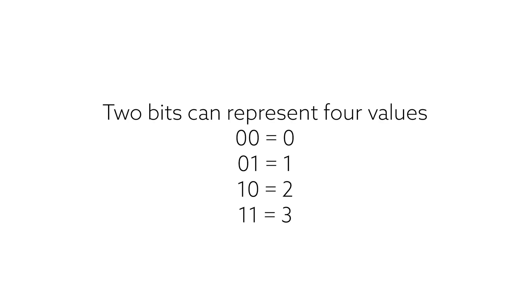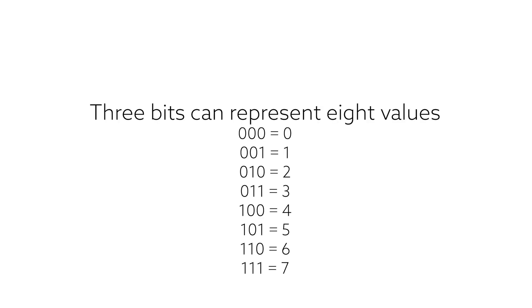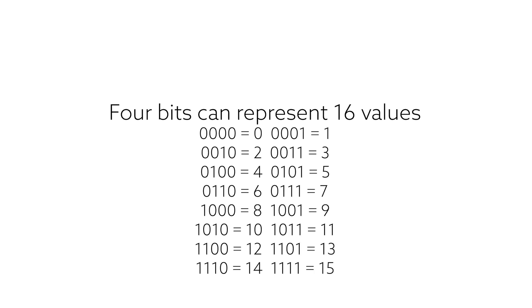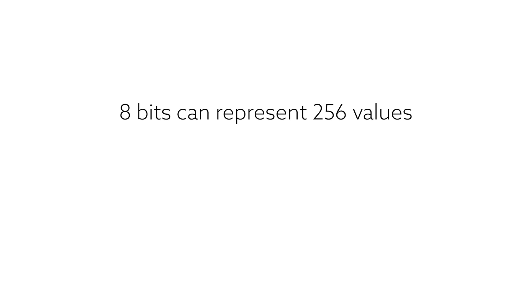Here is why. A bit is binary — it is either 0 or 1, so a single bit can represent 2 different values. If we have 2 bits, then we can represent 4 different values: 00, 01, 10, or 11. If we have 3 bits, then we can represent 8 different values. If we have 4 bits, then we can represent 16 different values. When it goes to 8 bits, then we can represent 256 different values.